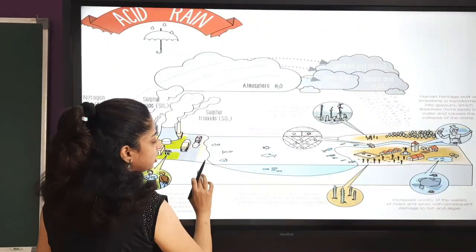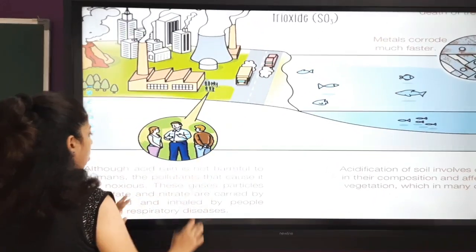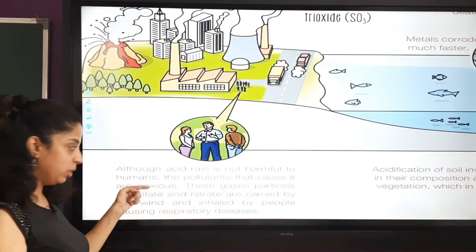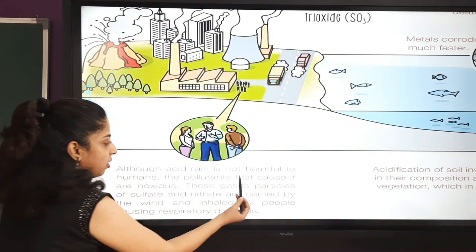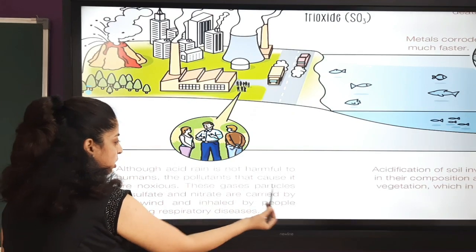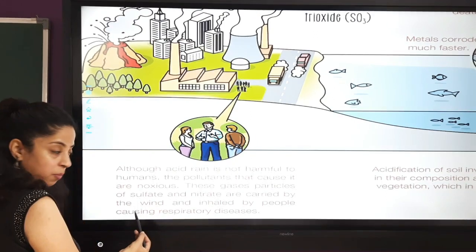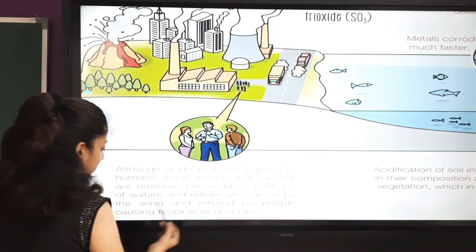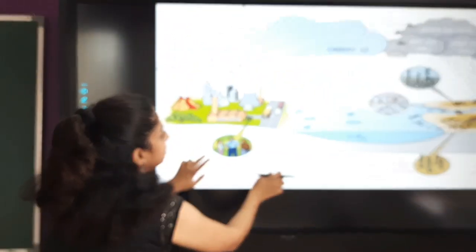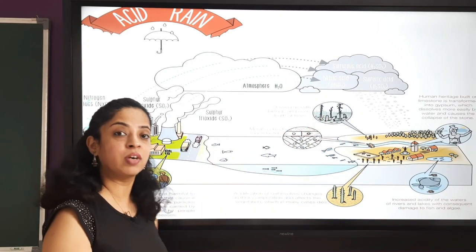Regarding the effect on humans: although acid rain itself is not directly harmful to humans, the pollutants that cause it are noxious. Particles of sulfate and nitrate are carried by the wind and inhaled by people, causing respiratory diseases. This is how acid rain is formed and these are its adverse effects.